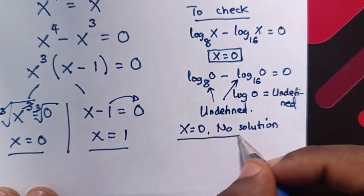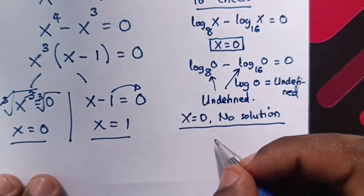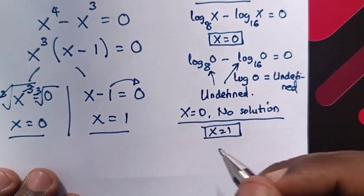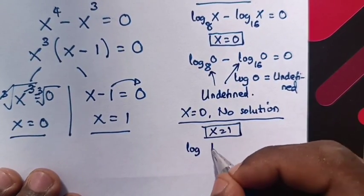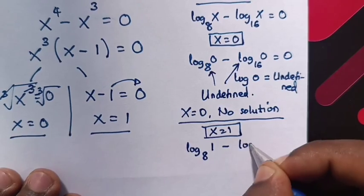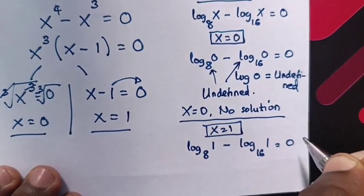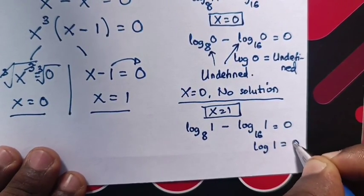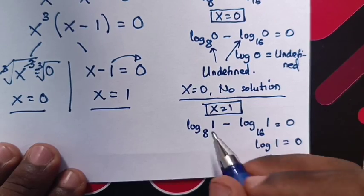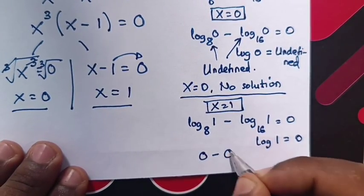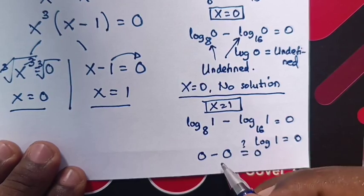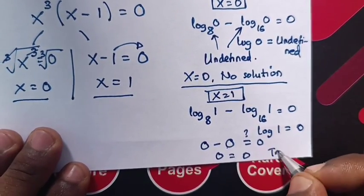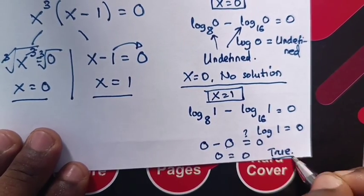Now let's check for x equals 1. When we substitute x equals 1, it will be log 1 base 8 minus log 1 base 16 — is it equals to 0? We know that log 1 is equals to 0. So log 1 base 8 is 0 and log 1 base 16 is 0, giving us 0 minus 0 equals 0. So 0 equals 0 — it's true for x equals 1.